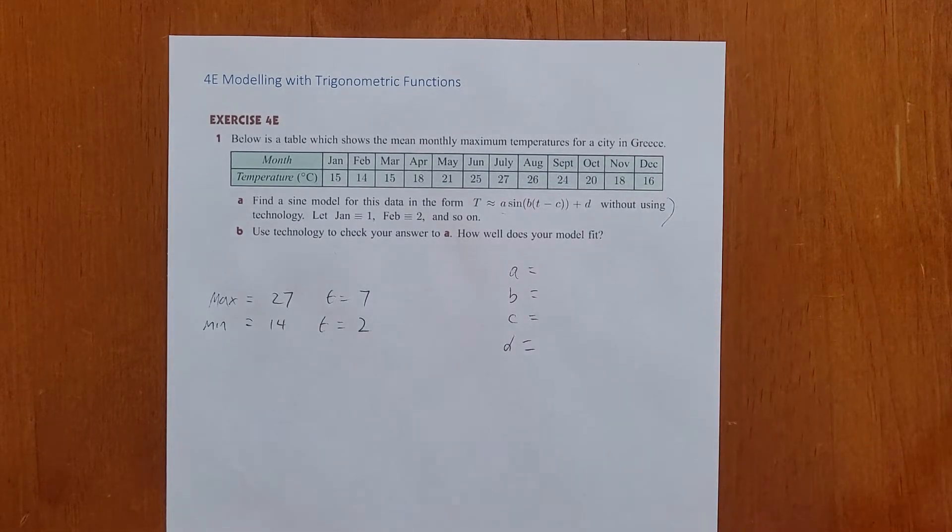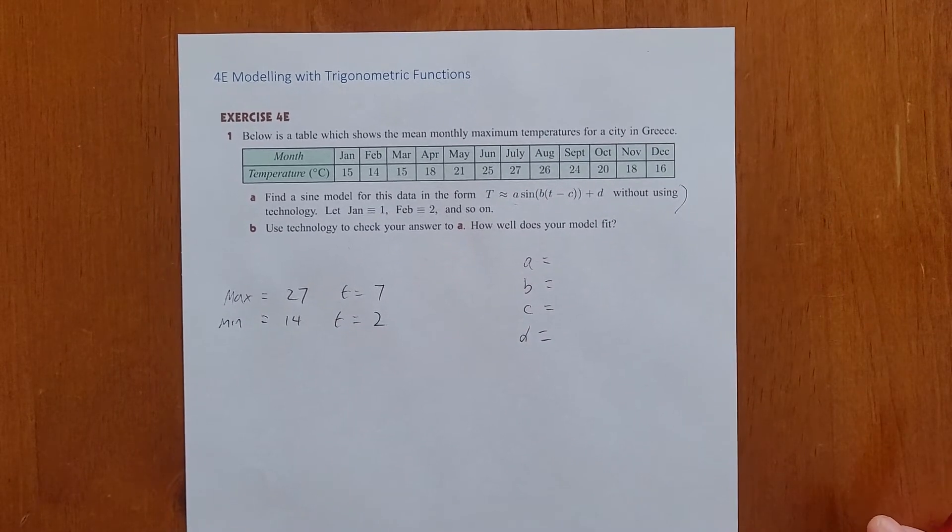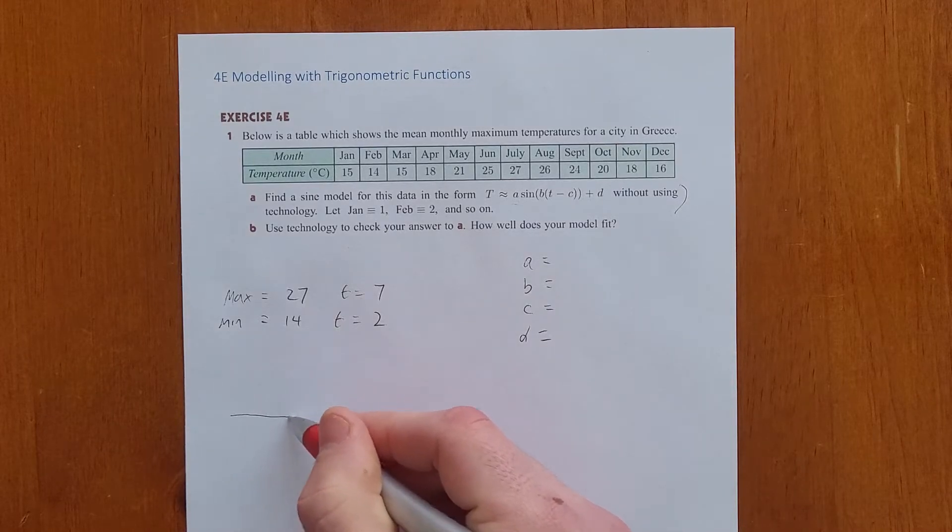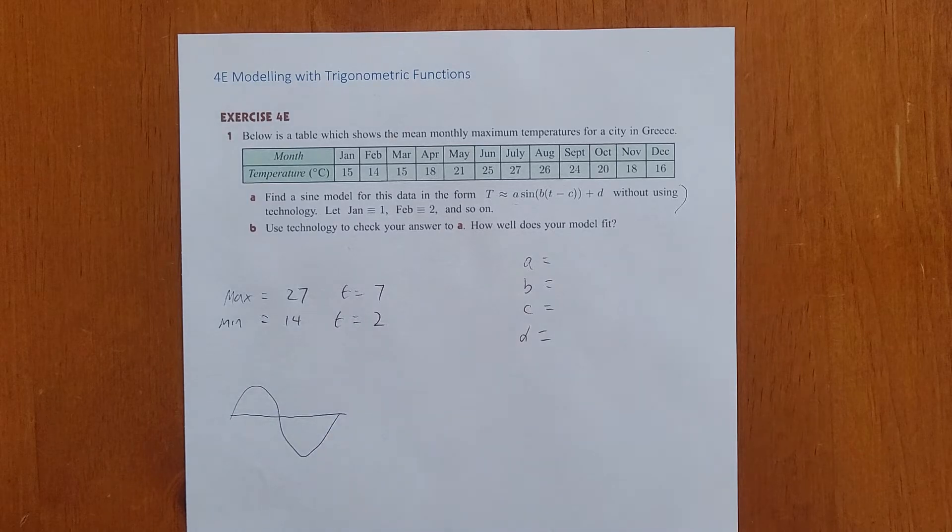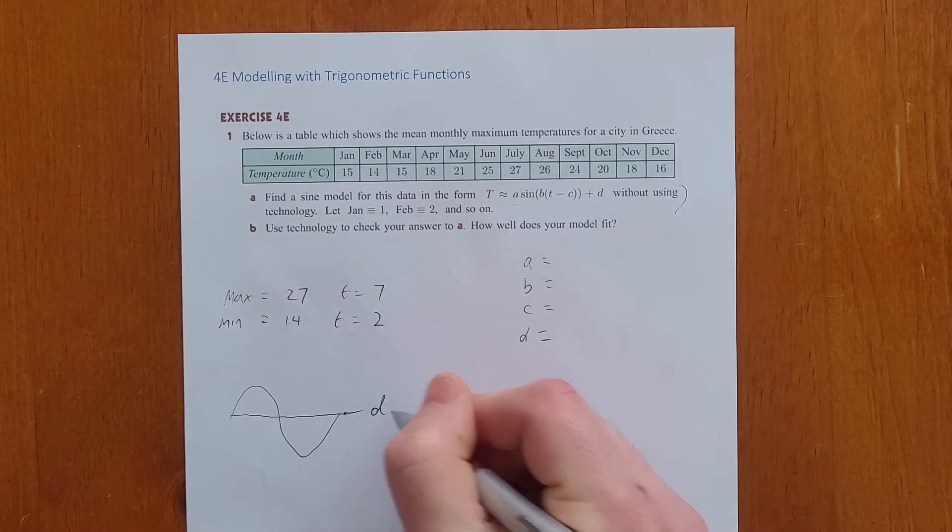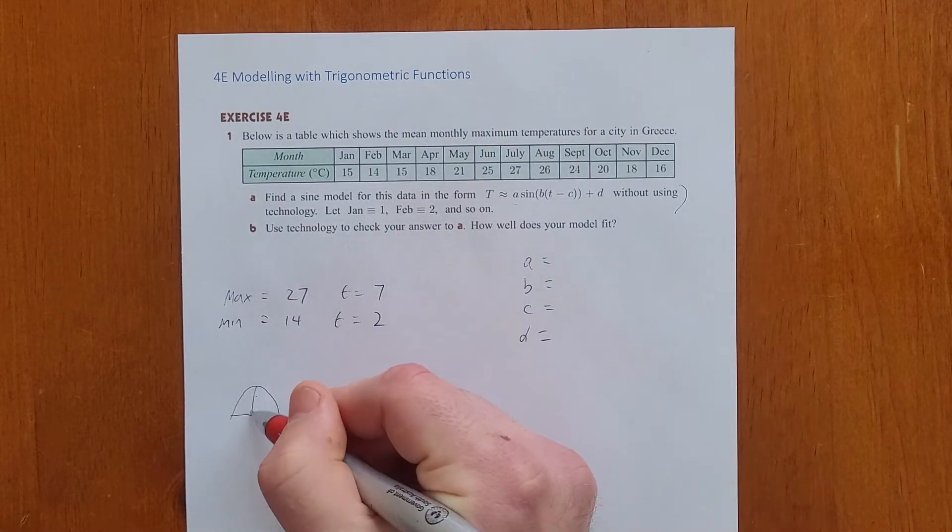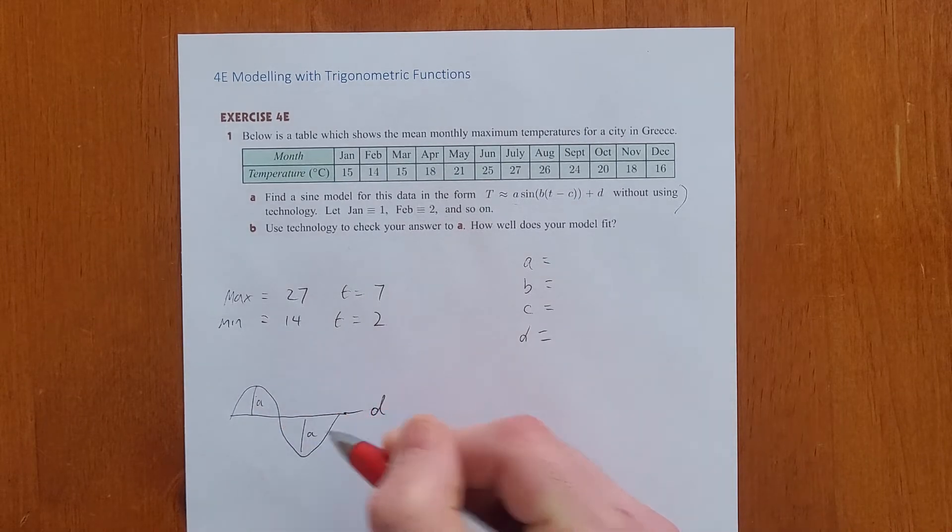Let's start off with the amplitude. The amplitude is the distance from the principal axes to a peak or to a trough. So let's think about a sine wave. It's going to look something like that. Here's our principal axes, that's our value of D, and this is going to be our amplitude. So maybe let's find D first.